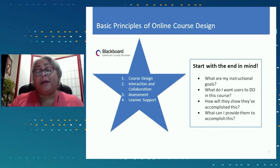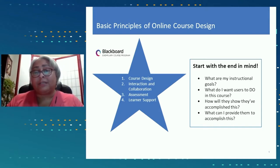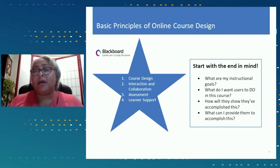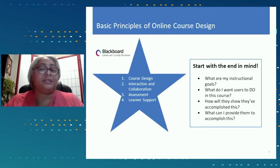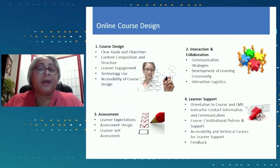One critical principle in online course design is that you always start with the end in mind. We think about what our instructional goals are, what we want students to do in the course, how they'll show they accomplished this, and what you'll provide to help them. Online courses are evaluated on four principal areas: course design, interaction and collaboration, assessment, and learner support. For course design, we ensure clear goals and objectives, appropriate content composition and structure, learner engagement, effective use of technology, and accessibility.